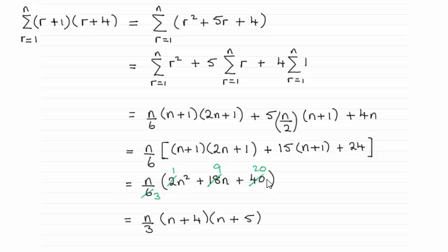And then I've just divided top and bottom by 2. And you can see that takes us to n over 3 and then n squared plus 9n plus 20. And that factorizes to (n+4) times (n+5) there.